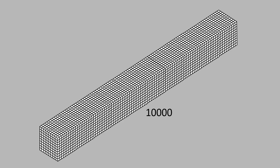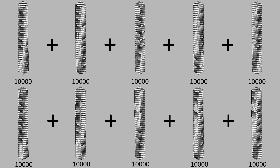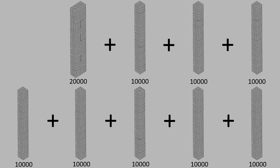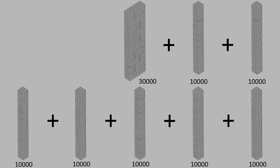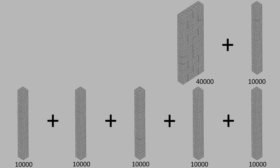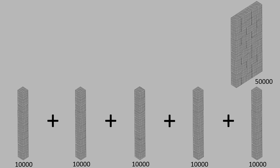This is the last level. Now, let's add 10,000 ten times. 10,000 plus 10,000 is equal to 20,000. 20,000 plus 10,000 is equal to 30,000. 30,000 plus 10,000 is equal to 40,000. 40,000 plus 10,000 is equal to 50,000.